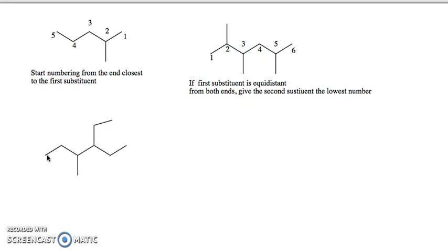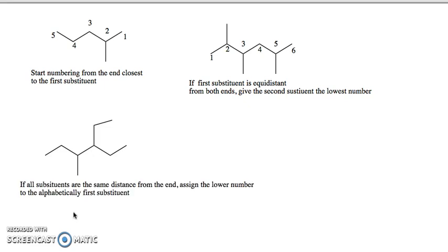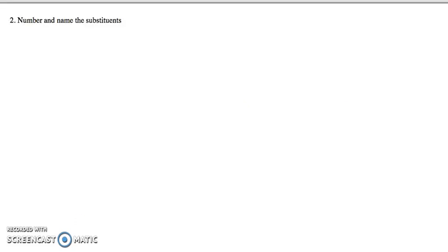There are instances where no matter what we do, all substituents are equidistant from both ends. In this molecule, a methyl group is three carbons from one end, and an ethyl substituent is also three carbons from the other end. In that situation, assign the lower number to the alphabetically first substituent. Since ethyl comes before methyl alphabetically — E before M — we start numbering from the ethyl end.